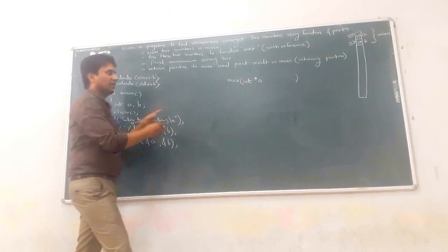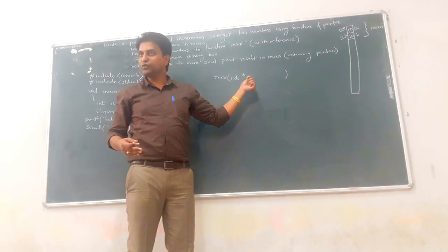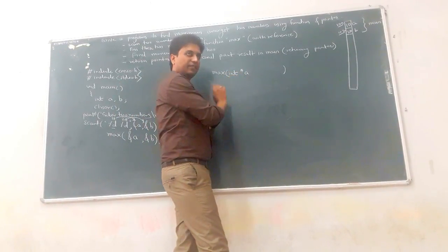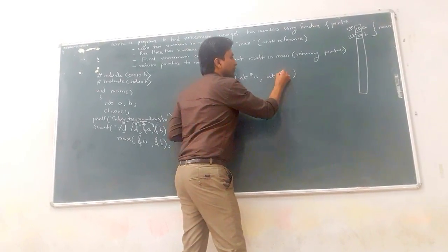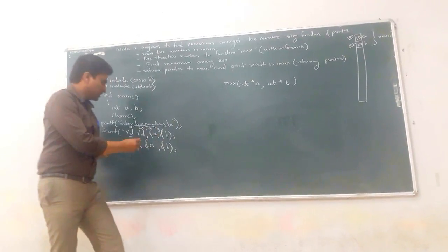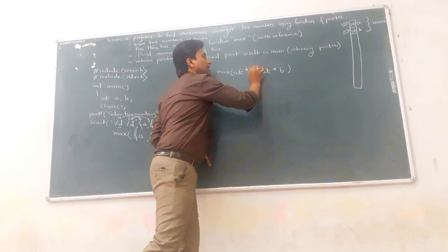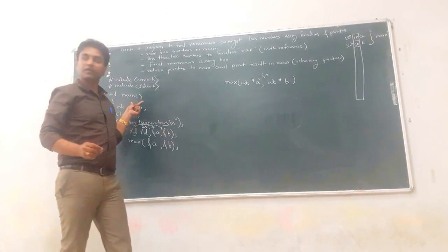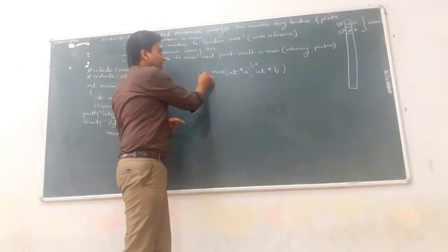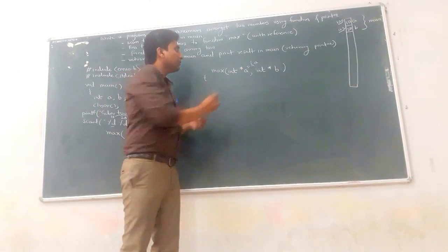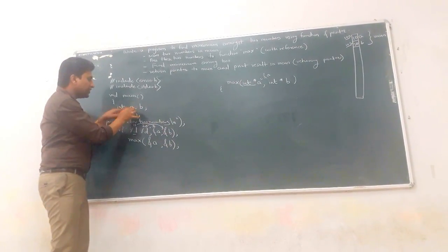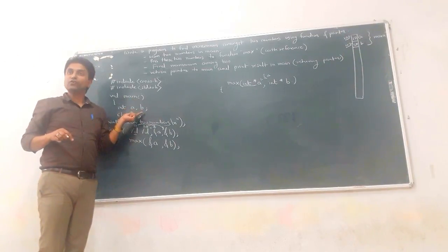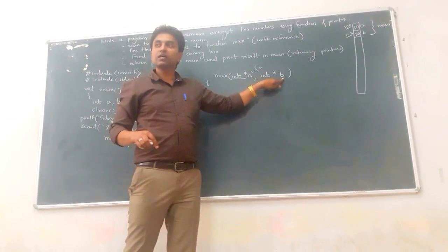These A and B pointer variables in the max function are in the scope of the max function and are different from the A and B value variables in main. The pointer variables store addresses of other integer variables. Now when address A (100) is passed, pointer A contains 100, and pointer B contains 102, meaning they point to the original value variables.